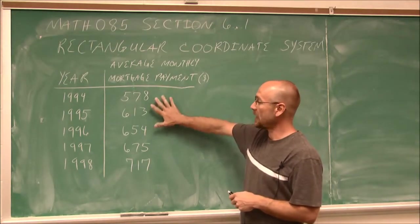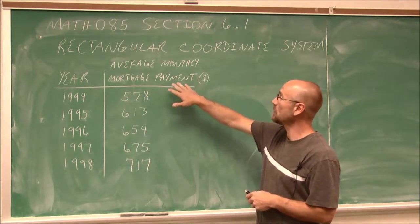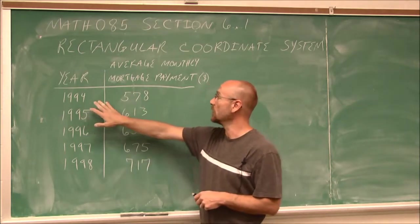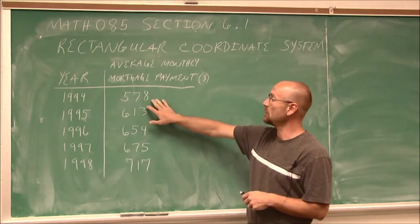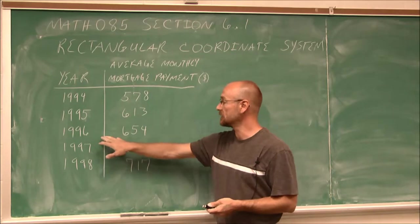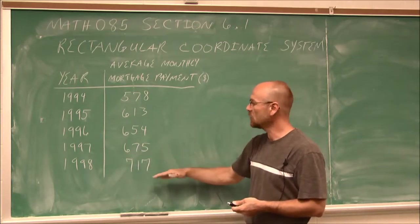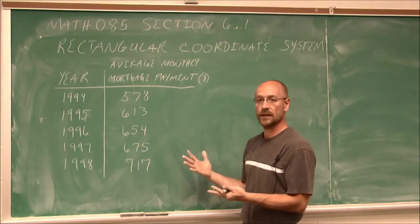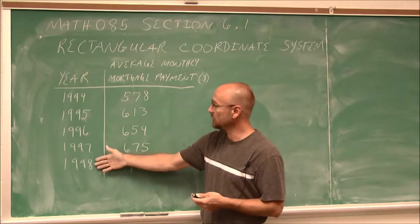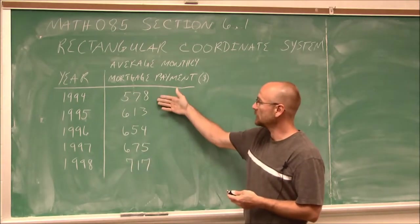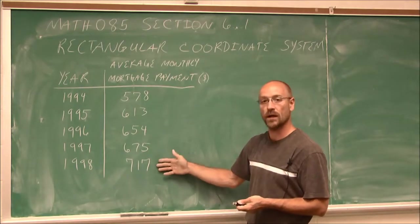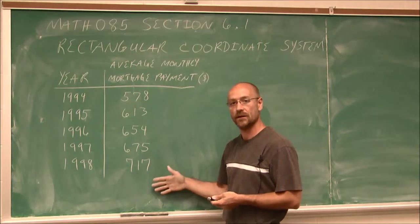Let's look at this data about average monthly mortgage payments by year. In 1994, the average monthly mortgage payment was $578. In 1995, it was $613. In 1996, $654, and so on. Looking at the data, we can conclude that as the year increases, the average cost of a mortgage increases as well — we can see that pattern of increasing.